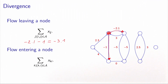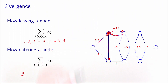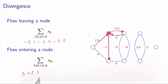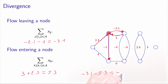Now let's calculate the total flow entering the node, which is the sum of the flows on the entering arcs. We have one flow entering the node, and another one entering as well. And this quantity — the total flow leaving minus the total flow entering — is called the divergence of the node.